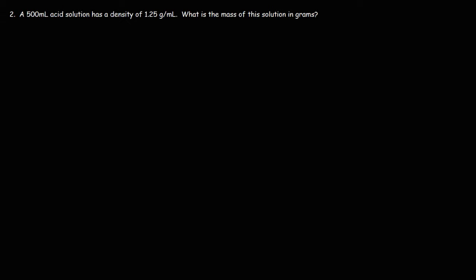Now let's work on a similar problem, but in reverse. A 500 milliliter acid solution has a density of 1.25 grams per milliliter. What is the mass of this solution in grams? So let's start with what we're given, which is the volume of the acid solution. Now we're given the density.